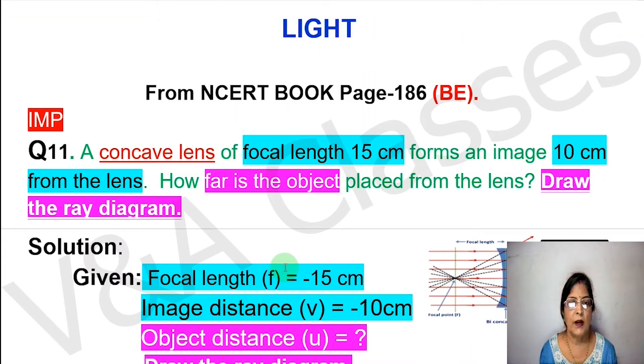Students, hope you are doing well. In this video we will discuss question number 11 from NCERT book page number 186 back exercise. This question is very important. The question is: a concave lens of focal length 15 centimeter forms an image 10 centimeter from the lens. How far is the object placed from the lens? Draw the ray diagram.